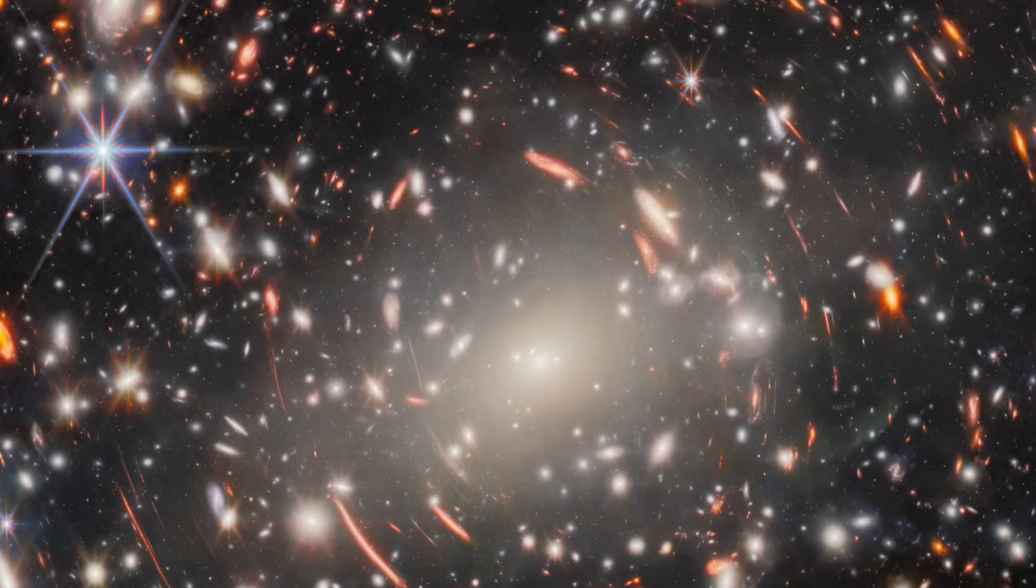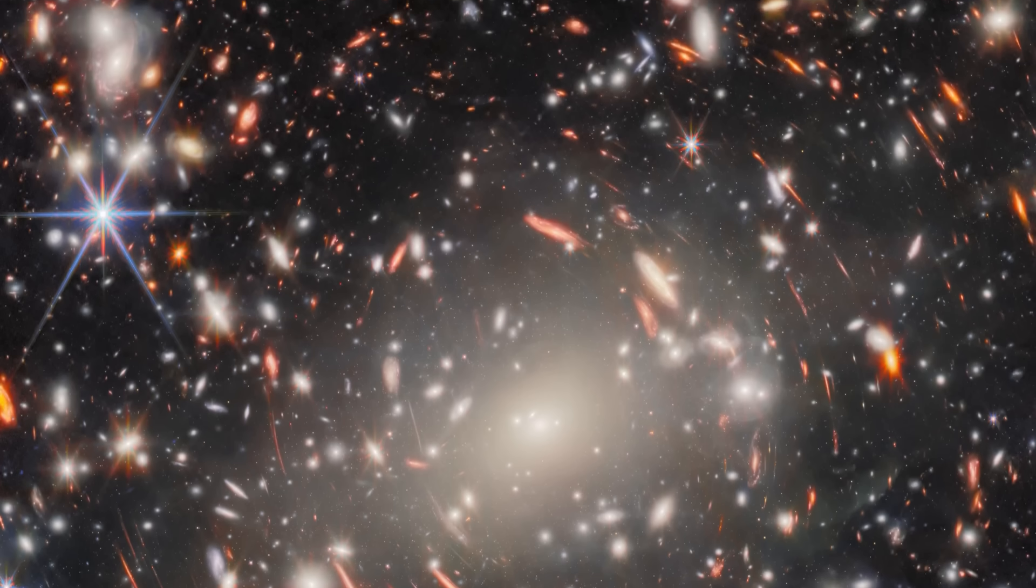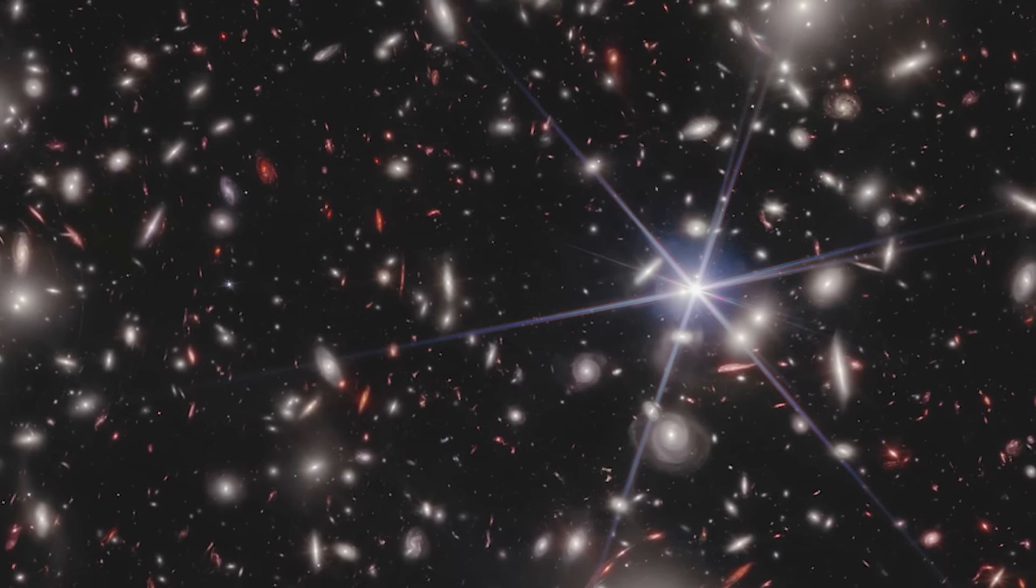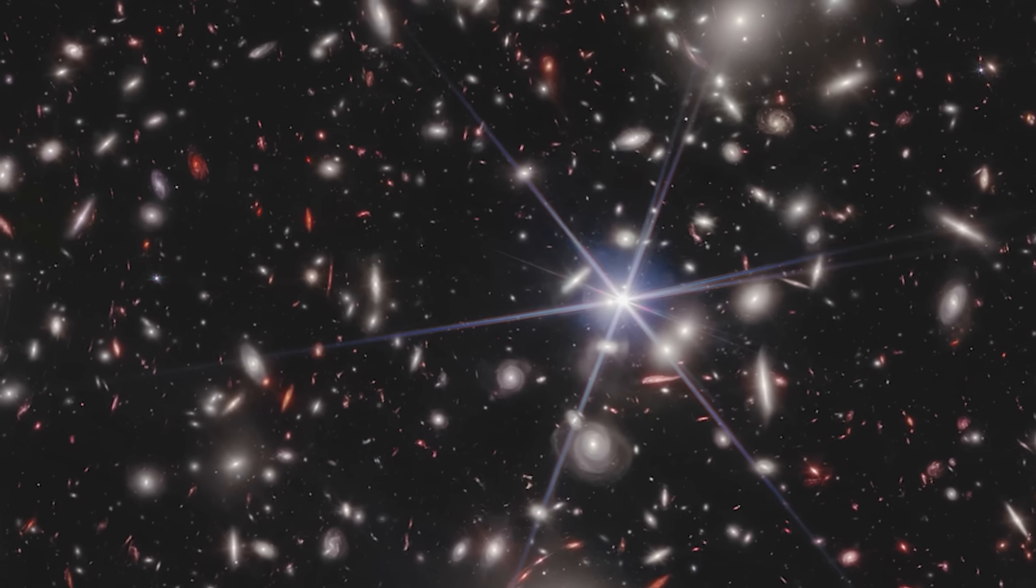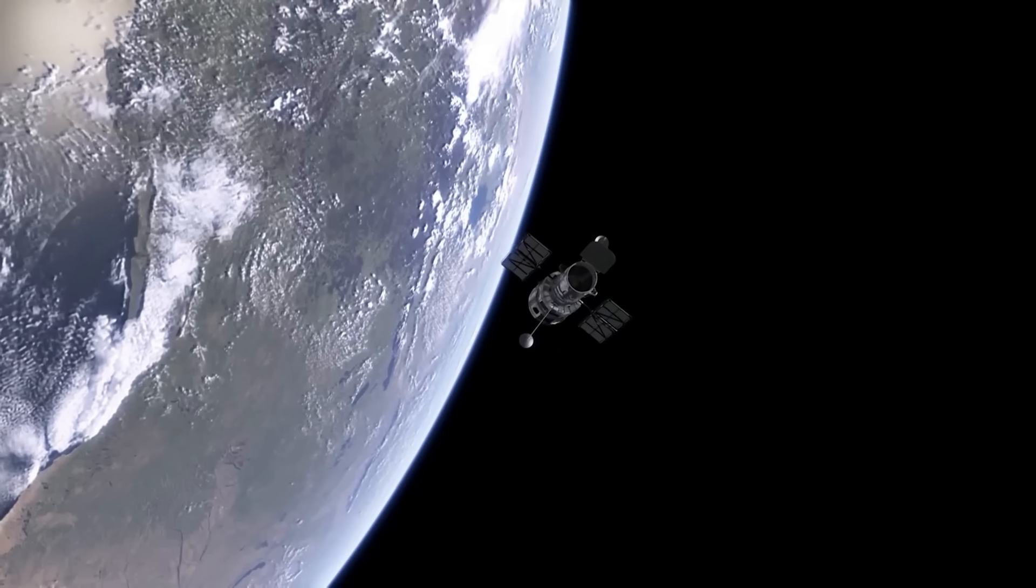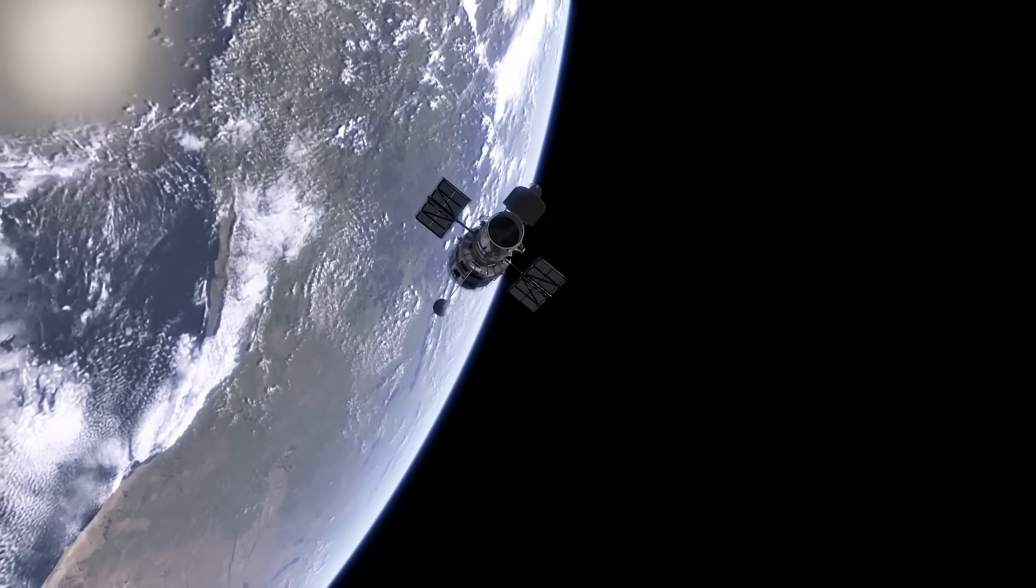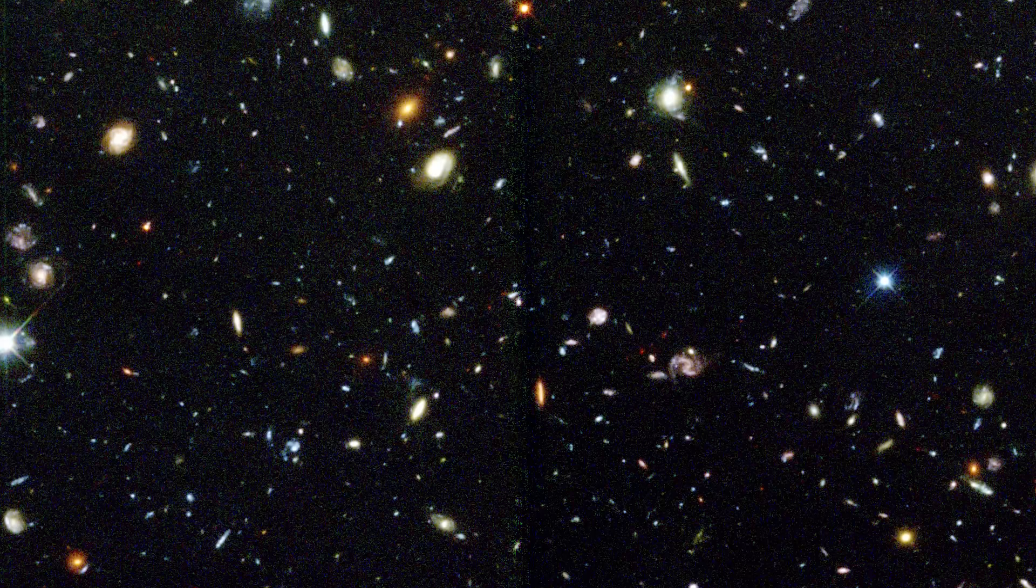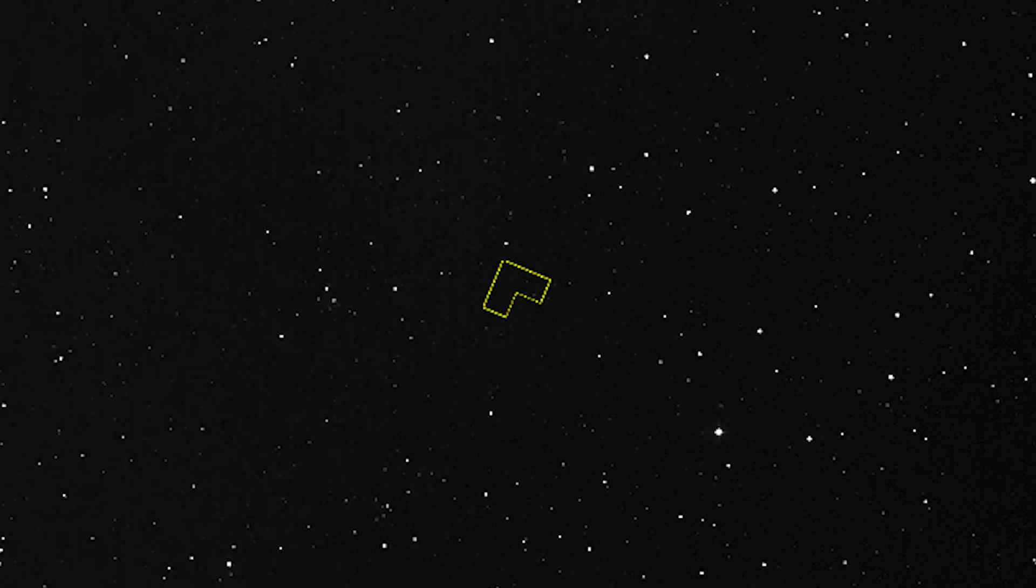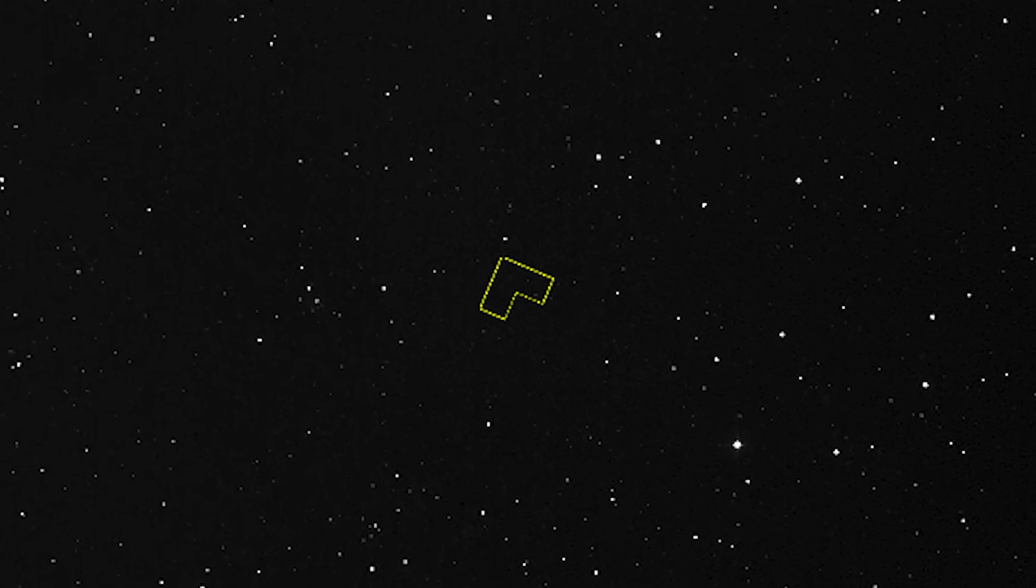This image is what is known as a deep field, a long exposure of a single area of the sky. The idea of deep fields has transformed our understanding of the universe, long before the James Webb Space Telescope came into the picture. This groundbreaking approach began with the Hubble Space Telescope in the 1990s. In 1995, Hubble captured the famous Deep Field North, staring at a tiny, seemingly empty patch of sky for over 100 hours across 10 days.